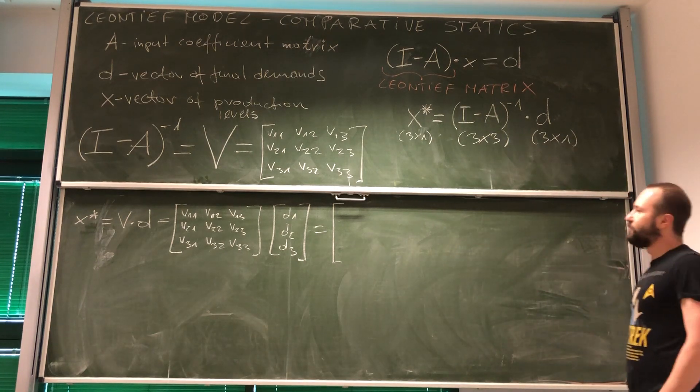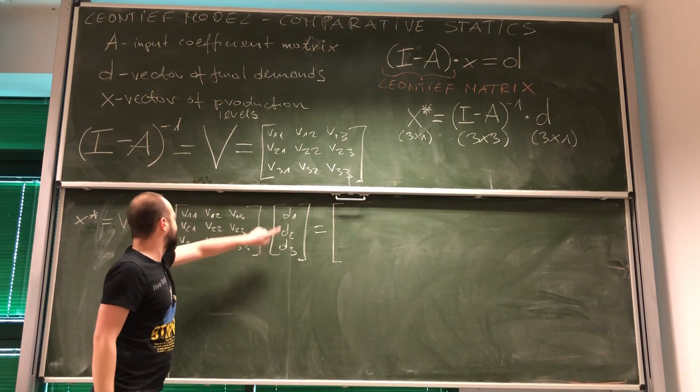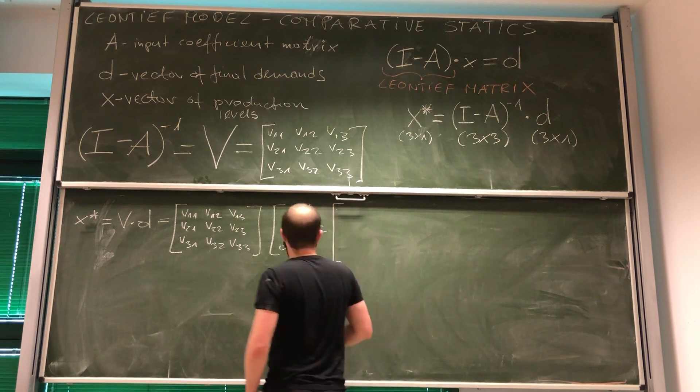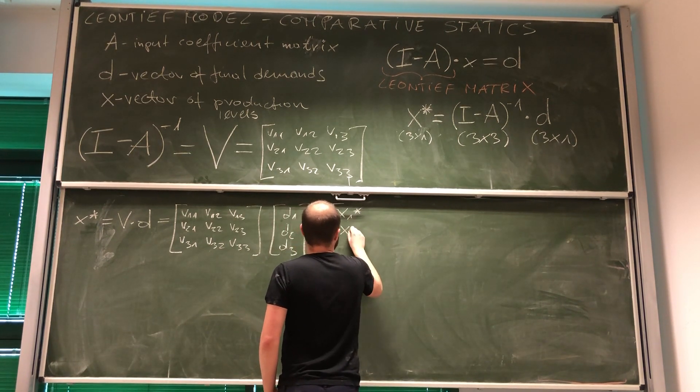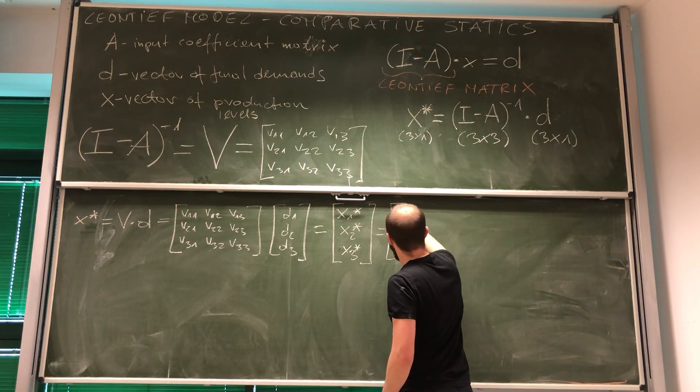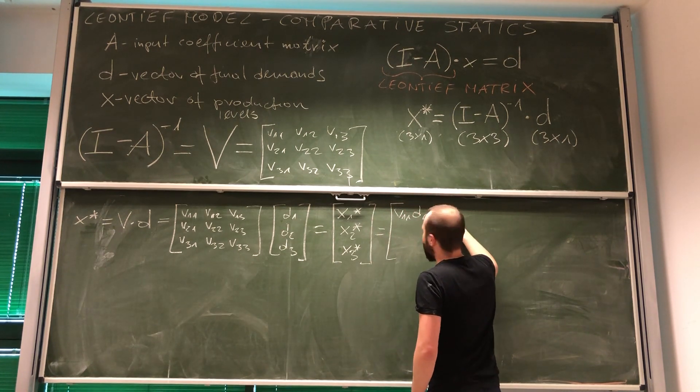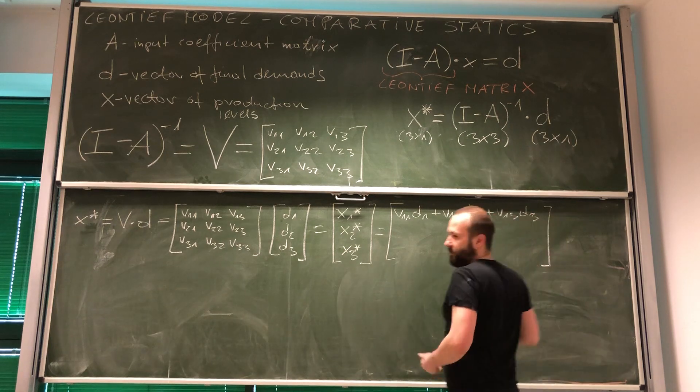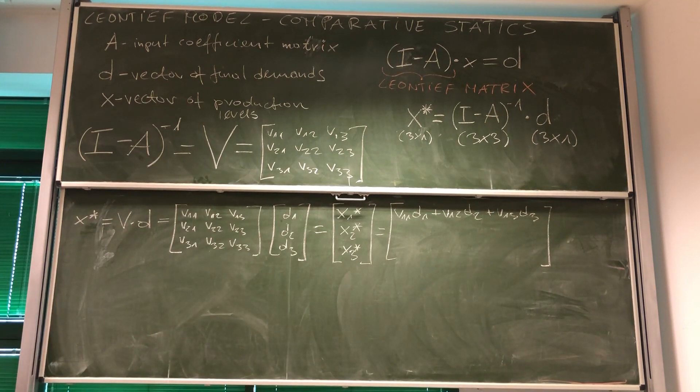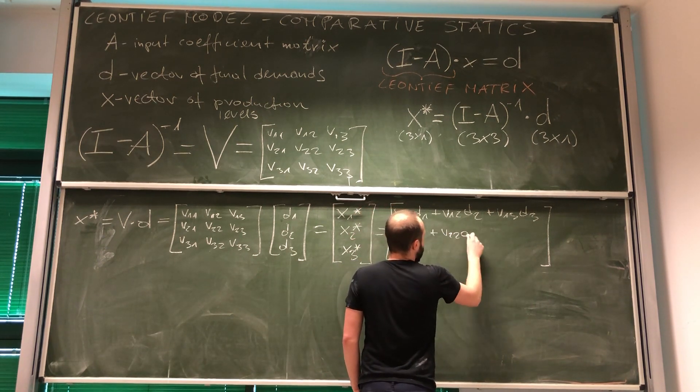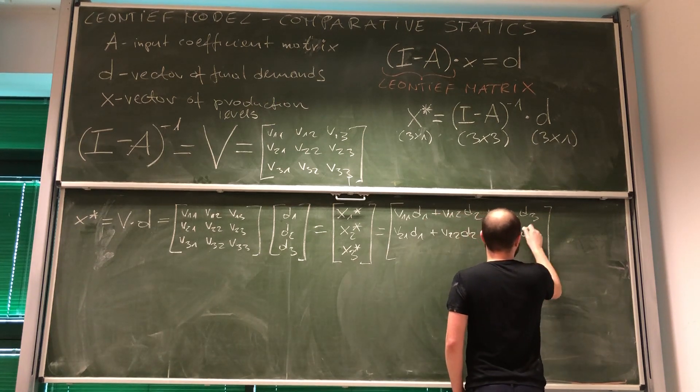Now, all we've got to do is to multiply. Multiplying those is a trivial thing to do because we're going to get that X1. So level of production of good 1, of good 2, and of good 3 are V1 1 D1 plus V1 2 D2 plus V1 3 D3. Then we've got V2 1 D1 plus V2 2 D2 plus V2 3 D3.